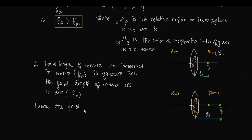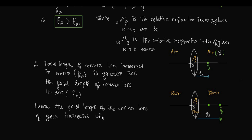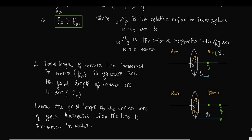Hence, the focal length of a convex lens made of glass increases when the glass lens is immersed in water.